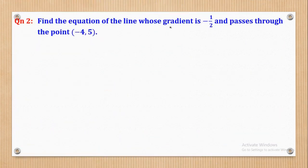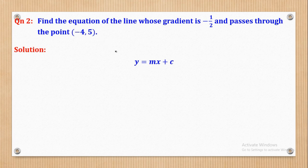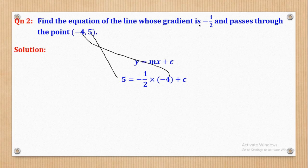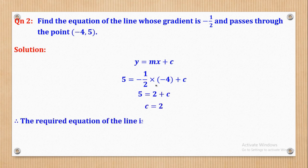Question 2: Find the equation of the line whose gradient is negative one-half and which passes through the point (negative 4, 5). We start by quoting y = mx + c, then substitute for the y-coordinate, the x-coordinate, and the gradient. Making c the subject gives c = 2. Therefore, the required equation is y = negative one-half x + 2.